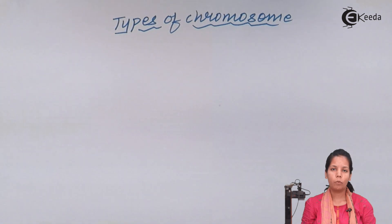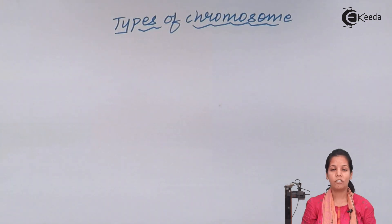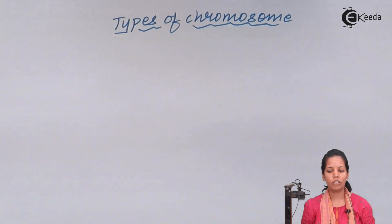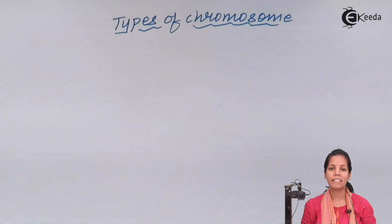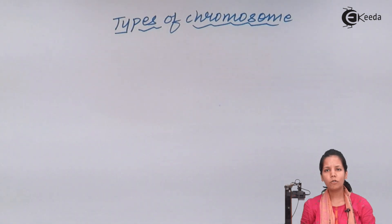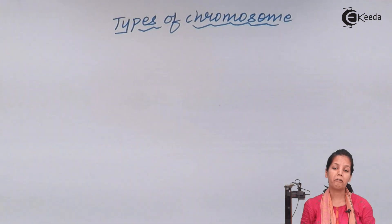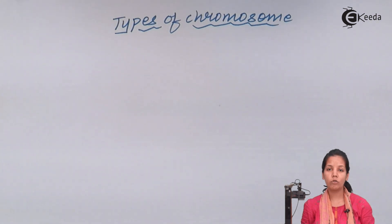Each chromosome basically has a staining region and a non-staining region. This non-staining region is called a centromere, which is associated with the center point of chromatids. Chromosomes acquire different shapes and are of different types due to the position of the centromere.